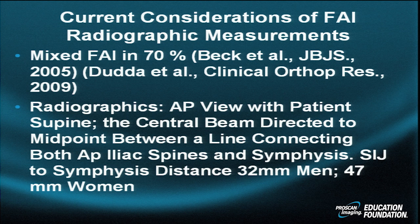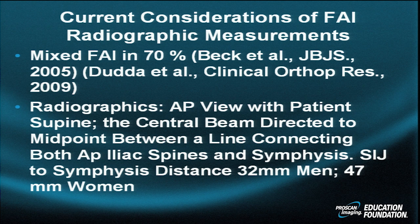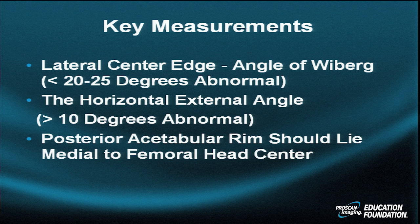Radiographically, when making measurements, because it's not a tomogram, the AP view is performed with the patient supine. The central beam is directed to the midpoint between a line connecting both anteroposterior iliac spines and the symphysis pubis. The sacroiliac joints to the symphysis distance is about 32 millimeters in men and 47 millimeters in women.